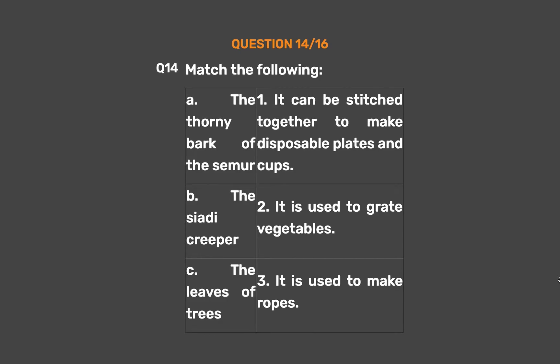Question 14: Match the following. A: The thorny bark of the Seymour — 1: It can be stitched together to make disposable plates and cups. B: The Siadi creeper — 2: It is used to grate vegetables. C: The leaves of trees — 3: It is used to make ropes.